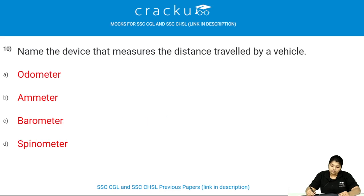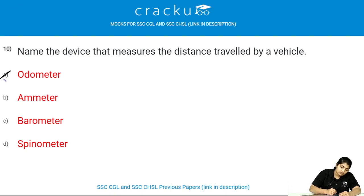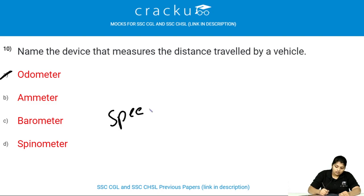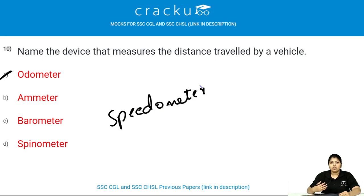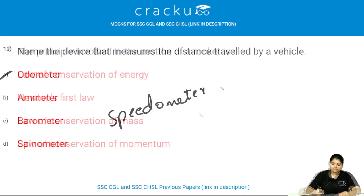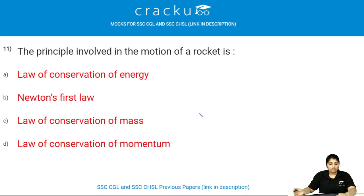Name the device that measures the distance travelled by a vehicle. A speedometer is the device which measures the distance travelled by the vehicle. A speedometer also measures the speed of the vehicle.